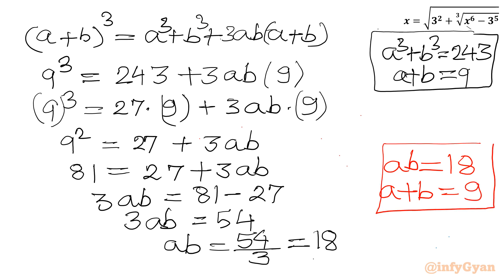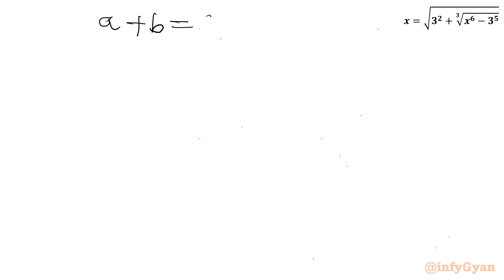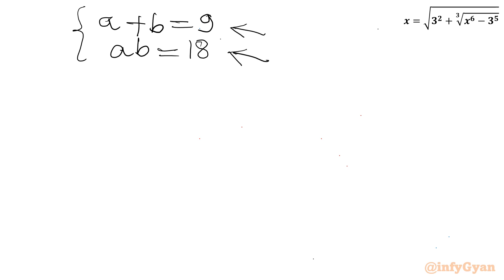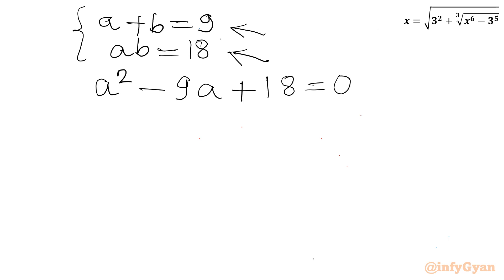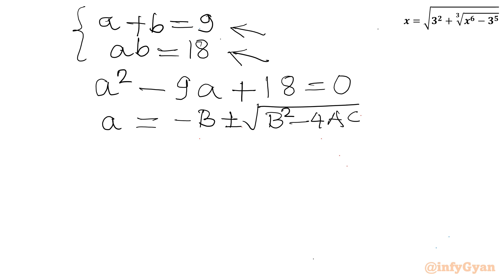This system is very easy to solve. Consider a quadratic equation whose roots are A and B. The first equation gives the sum of roots and the second gives the product. So the quadratic is a² − 9a + 18 = 0. Using the quadratic formula: a = (9 ± √(81 − 72)) / 2.